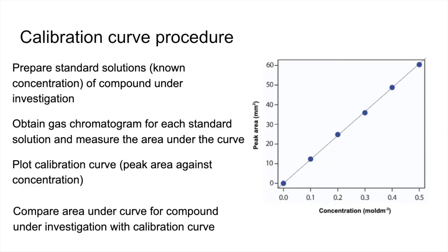And then we'd compare the area under the curve for the compound in our gas chromatogram with the calibration curve. So for example, if the peak area of our sample was 45 millimeters squared, we'd literally just run a line along till it hits the calibration curve. And then we'd simply just read down onto the x-axis and get the concentration. So this one looks like it's 0.375 moles per decimeter cubed.